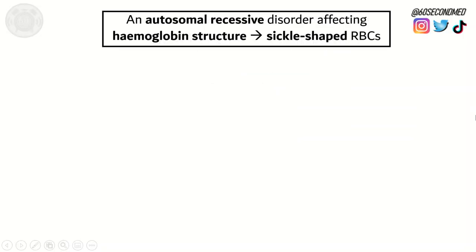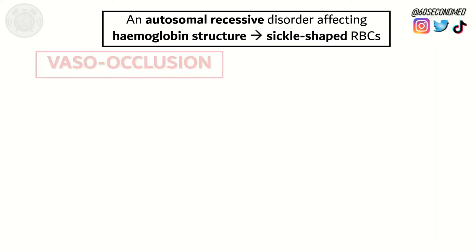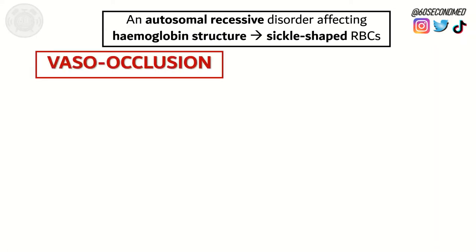Sickle cell disease is an autosomal recessive disorder that affects hemoglobin structure. This leads to abnormally shaped red blood cells, which can block blood vessels throughout the body, leading to acute complications due to vaso-occlusion.